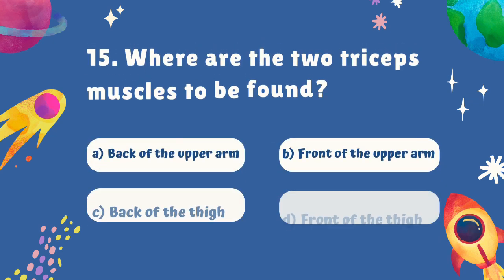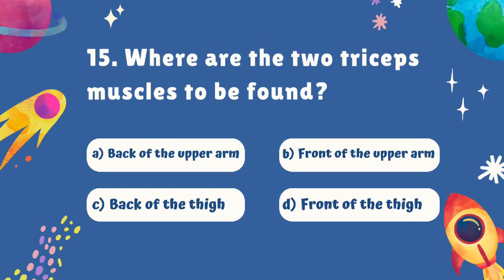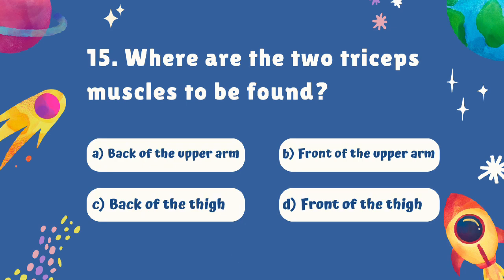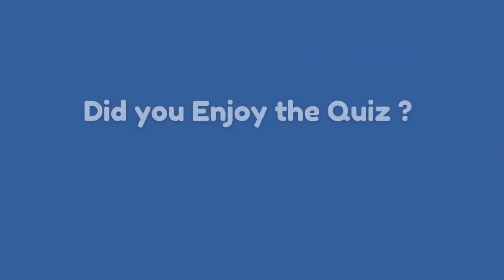Question number fifteen. Where are the two triceps muscles to be found? Is it A. Back of the upper arm, B. Front of the upper arm, C. Back of the thigh, or D. Front of the thigh? The correct answer is A. Back of the upper arm.